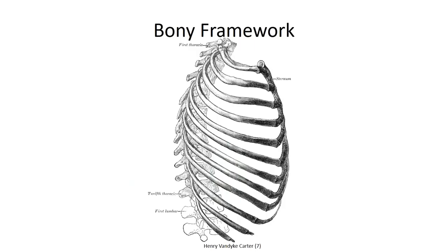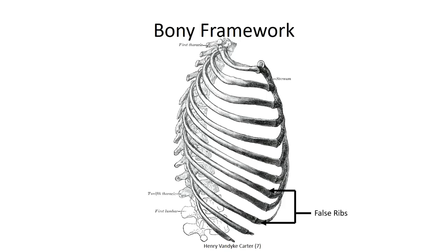The bony framework of the thorax is made up of the thoracic vertebrae posteriorly, the sternum anteriorly, and the ribcage, which interconnects these two elements. There are 12 pairs of ribs that span from posterior to anterior. The ribs can be broadly classified according to their cartilaginous attachments to the sternum. The superior seven ribs each have a direct costal attachment to the sternum and are therefore defined as true ribs. The next three pairs, ribs 8 through 10, are referred to as false ribs, as their costal cartilage fuses together to create a single indirect attachment to the sternum. The final two pairs, ribs 11 and 12, have no attachment whatsoever to the sternum but remain suspended inside the muscular sheaths — we refer to these as floating ribs.